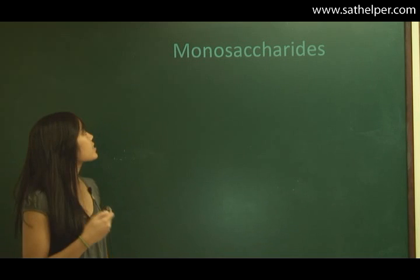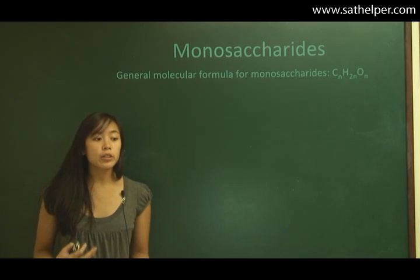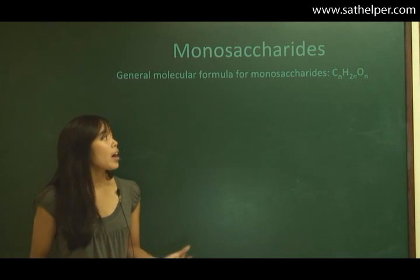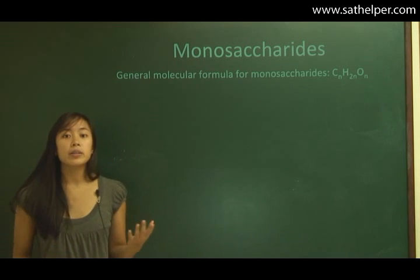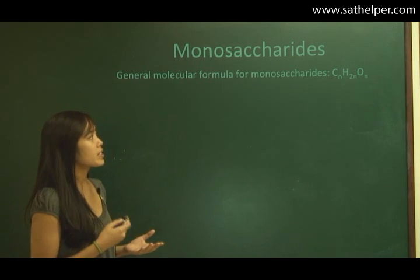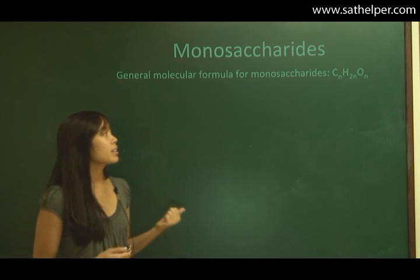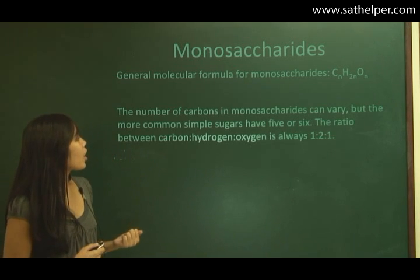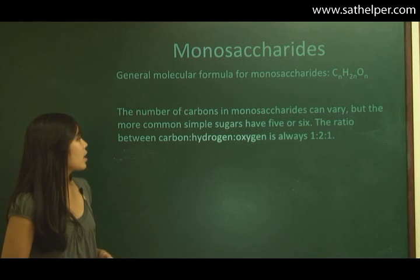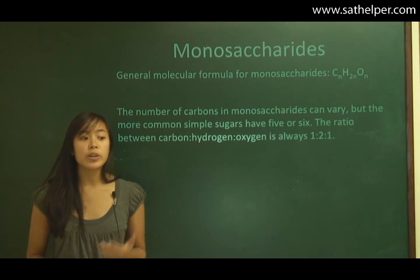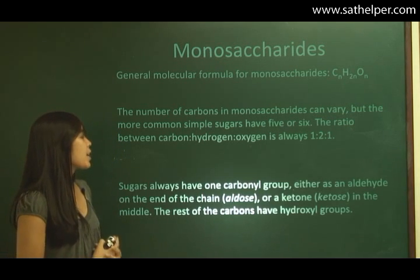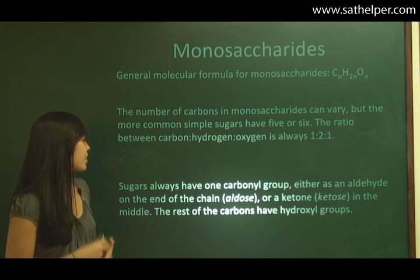The general molecular formula for monosaccharides is (CH₂O)n — basically any molecular formula for a monosaccharide is going to be some multiple of CH₂O. The number of carbons in monosaccharides can vary, but the more common simple sugars have five or six carbons. The ratio between carbon to hydrogen to oxygen is always one to two to one. Sugars always have one carbonyl group, either as an aldehyde on the end of the chain.